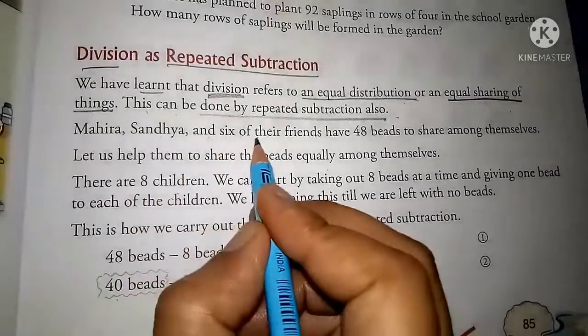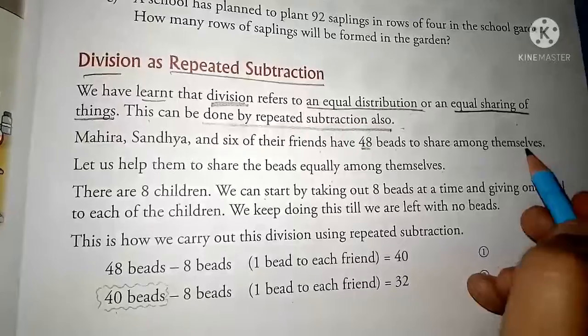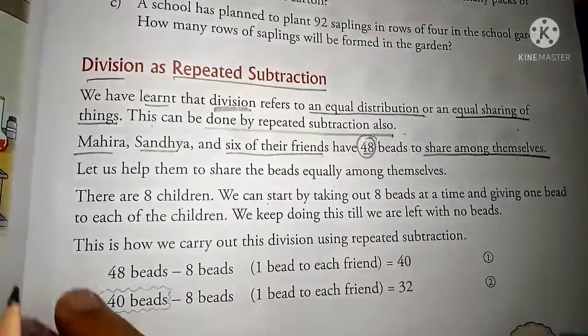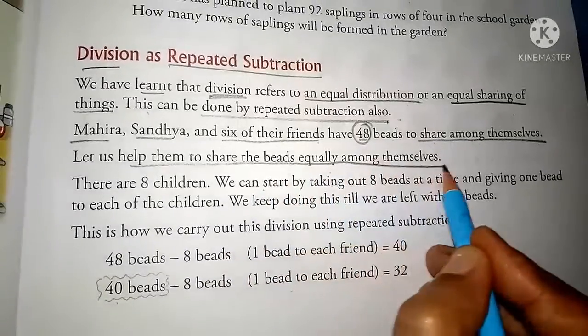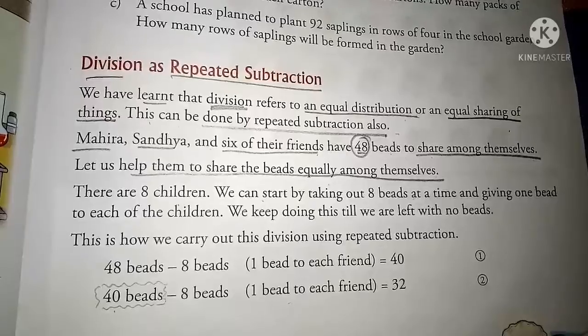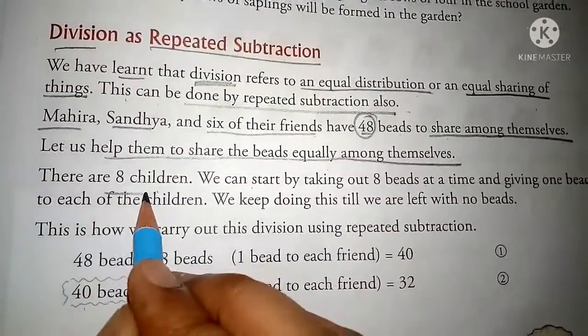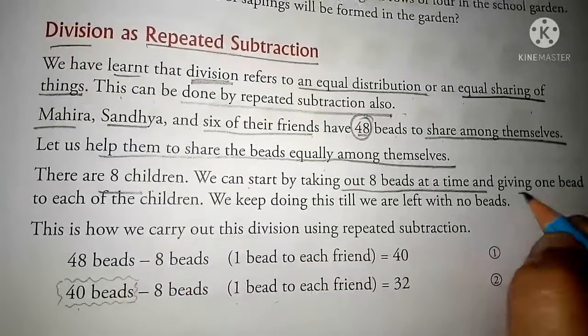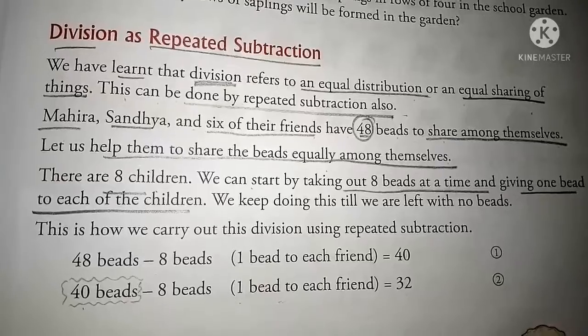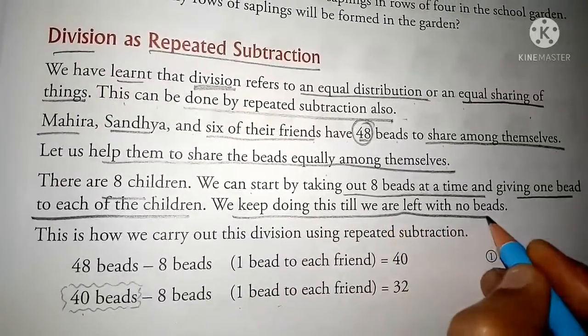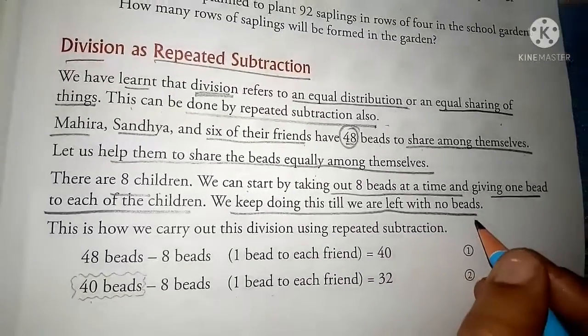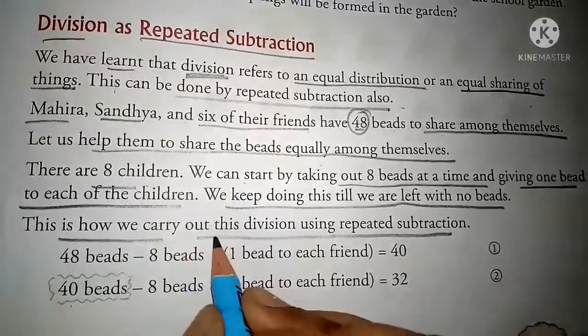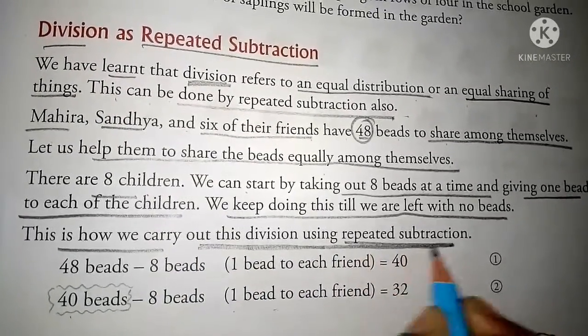Mahera, Sandhya and six of their friends have 48 beads to share among themselves. Let us help them to share the beads equally among themselves. There are 8 children. We can start by taking out 8 beads at a time and giving one bead to each of the children. We keep doing this till we are left with no beads. This is how we carry out this division using repeated subtraction. See: